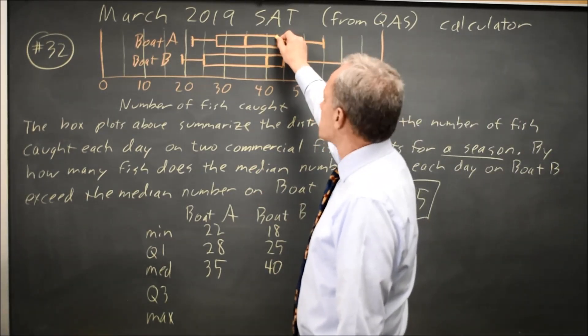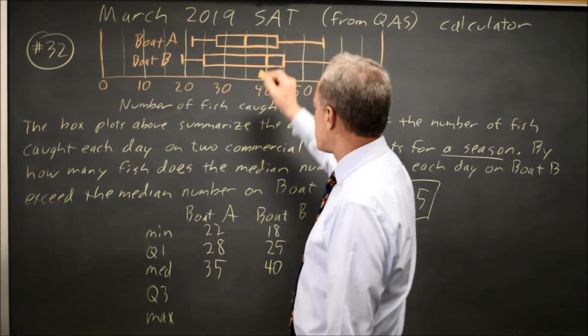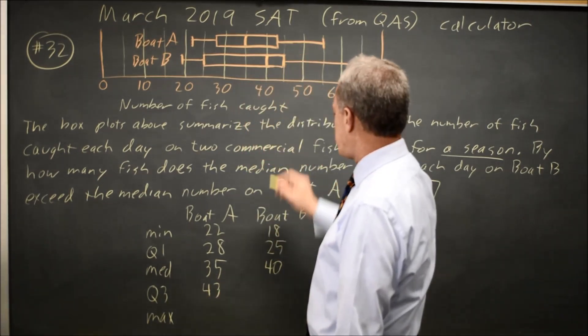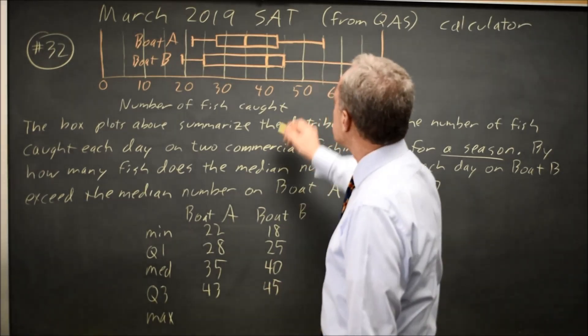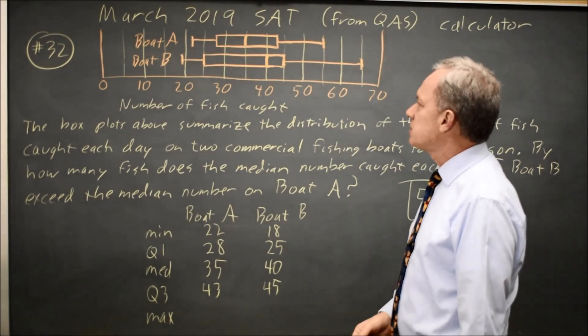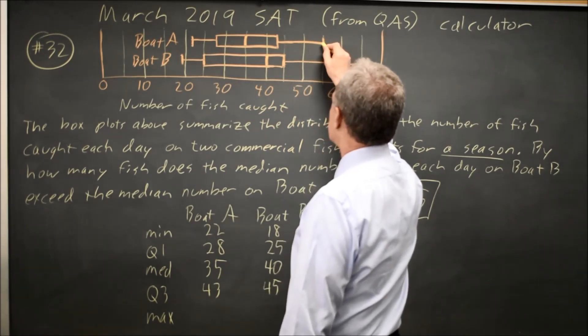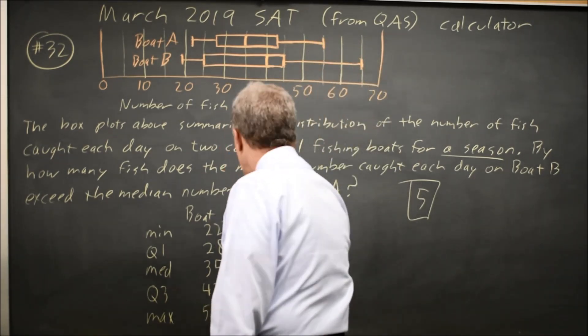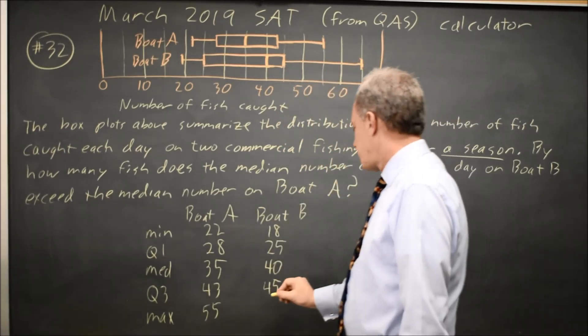Quartile 3 is the upper end of this rectangle. For boat A, that looks like 40, 45, that's probably 43. And for boat B, the upper end of the rectangle is 45. And then the maximum is the upper end of the whisker, where they draw a vertical line at the end of the whisker. That's the largest catch of the season. And for boat A, that is 50, 55, 60. It's 55. And for boat B, 60, 65, 70. That's 65.